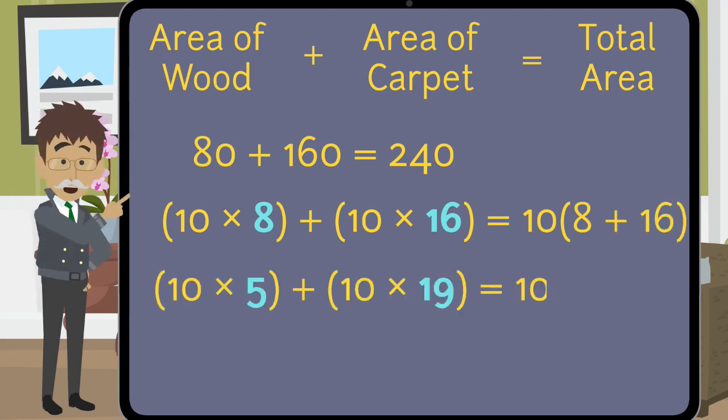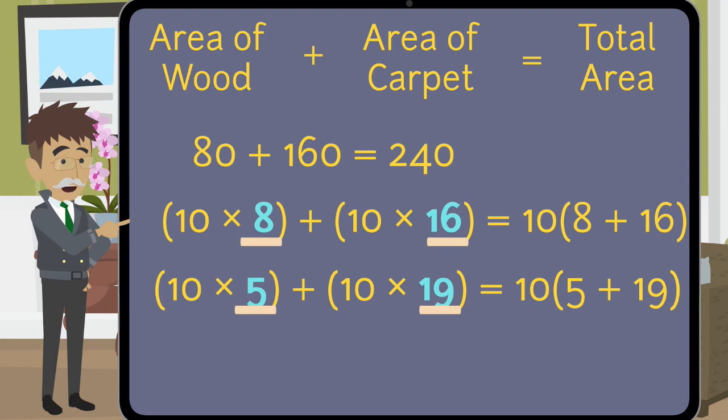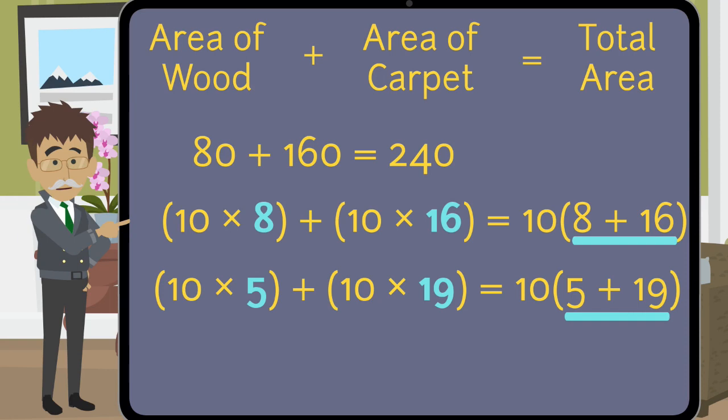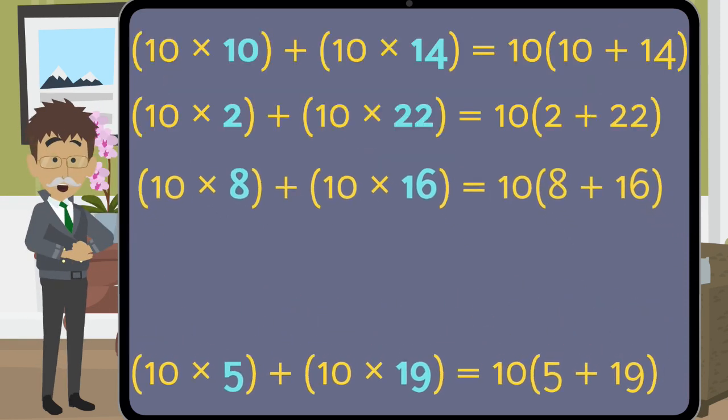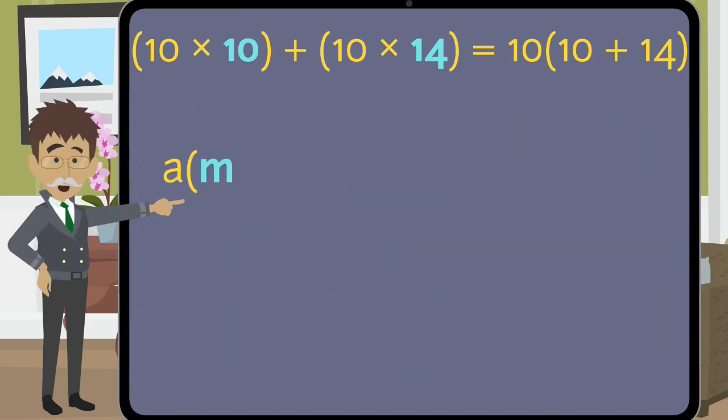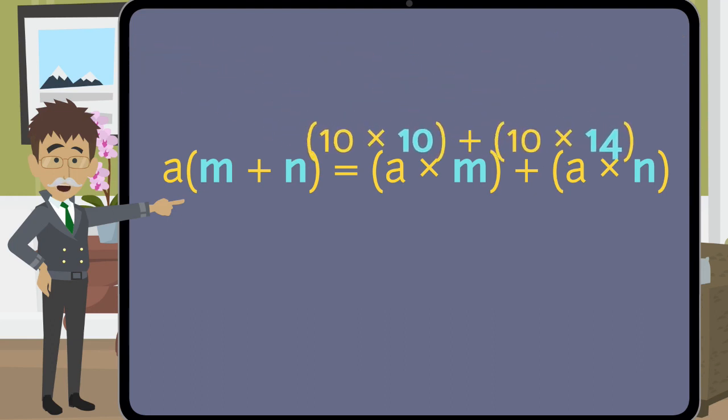Notice the similarities between the two equations. On the left side of both equations, the width is multiplied by the sum of the two parts of the length. The two products are then added together. On the right side of both equations, the width is multiplied by the sum of the two parts of the length. In fact, no matter where we divide the room, we can generate a similar true statement. We can generalize the equation to the following: a times the sum of m and n is the same as a times m plus a times n.